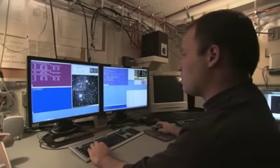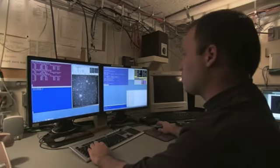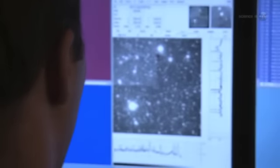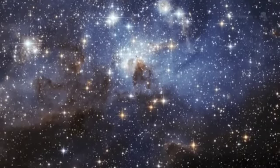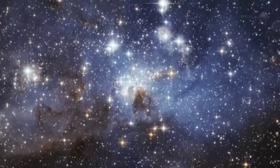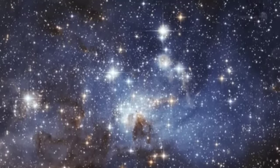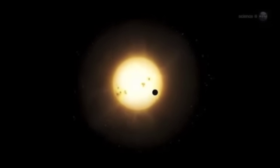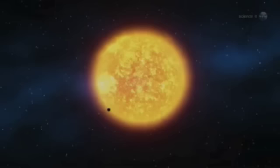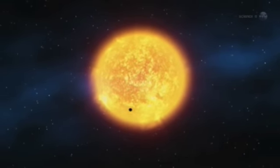But finding a Goldilocks planet is just the first step. Getting to know it is much more difficult. The problem is that, in the cosmic scheme of things, Earth-sized planets are relatively small, and the ones Kepler is finding are staggeringly far away. Most are hundreds or even thousands of light-years away from Earth. Almost completely hidden by the glare of their parent stars, these distant pinpricks are very difficult to study.